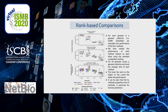The lower the rank the better, so higher on the y-axis is better. What can be seen is that supervised learning outperforms label propagation, particularly for function prediction.